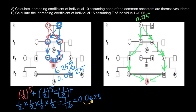Now let's find how many nodes we have in this loop, excluding individual 15. One, two, three, four, five, six, seven. So far our calculations are similar to the previous example: one-half to the power of seven.